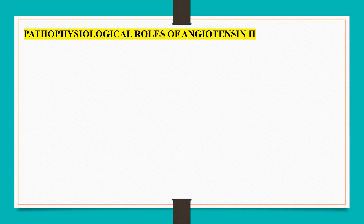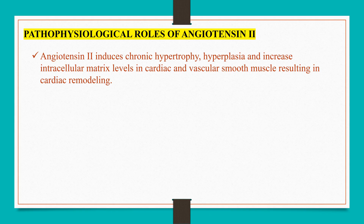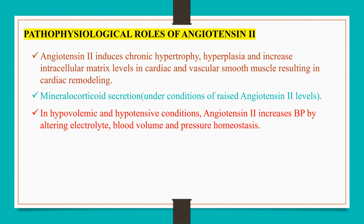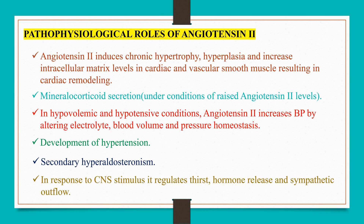Pathophysiological roles of angiotensin 2: angiotensin 2 induces chronic hypertrophy, hyperplasia, and increased intracellular matrix levels in cardiac and vascular smooth muscles, resulting in cardiac remodeling. Under conditions of raised angiotensin 2 levels, mineralocorticoid secretion is potentiated. In hypovolemic and hypotensive conditions, angiotensin 2 increases blood pressure by altering electrolyte, blood volume, and pressure homeostasis. Excessive levels of angiotensin 2 cause development of hypertension and secondary hyperaldosteronism. In response to CNS stimuli, it regulates thirst, hormone release, and sympathetic outflow.